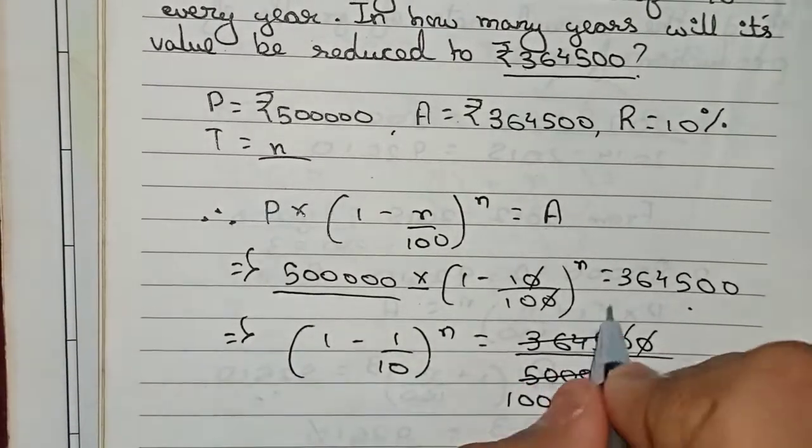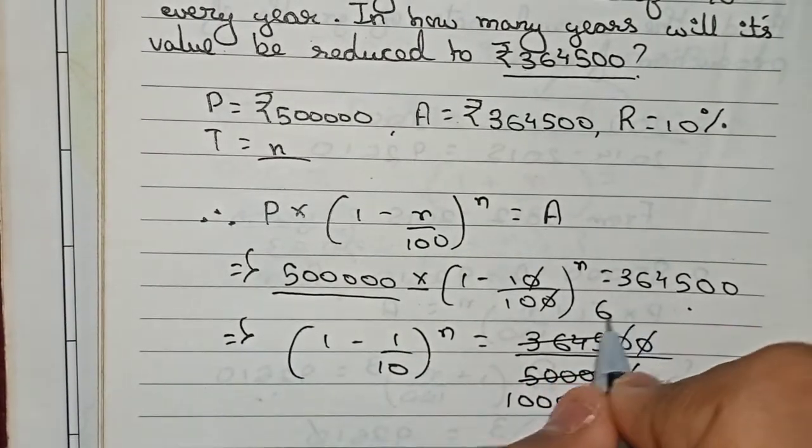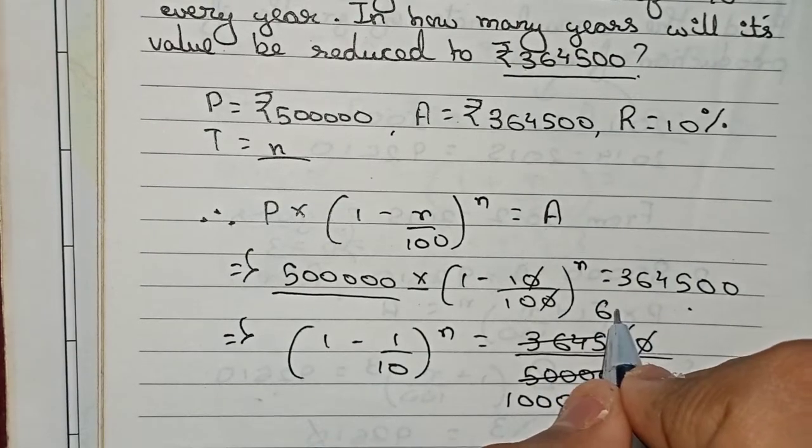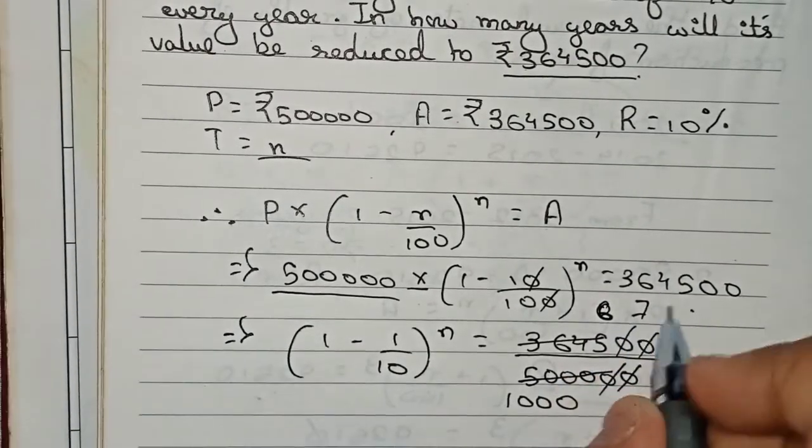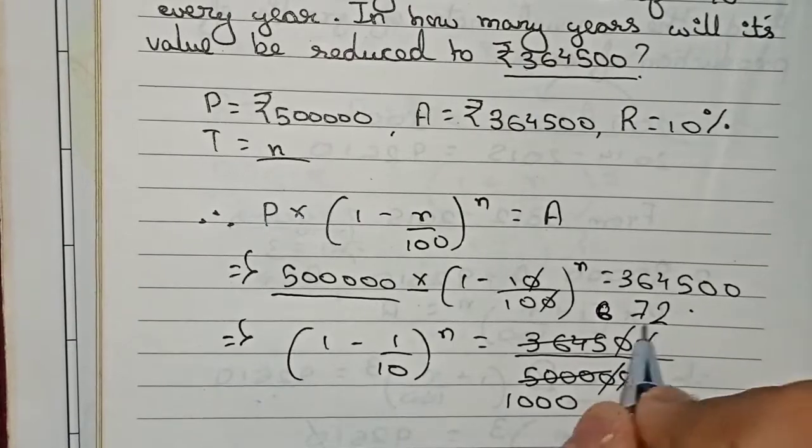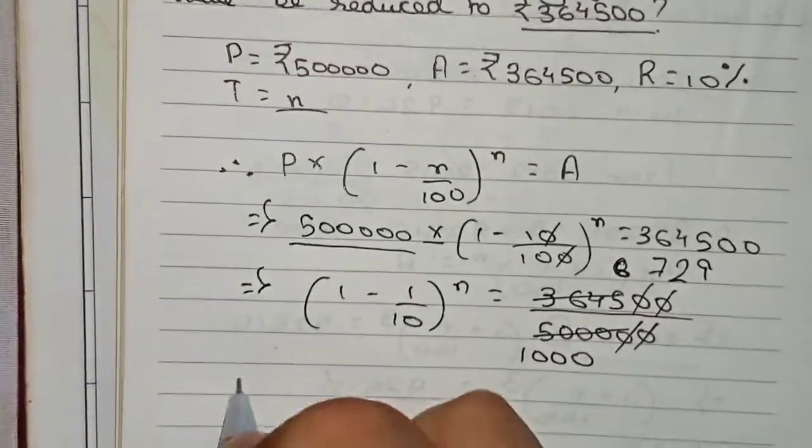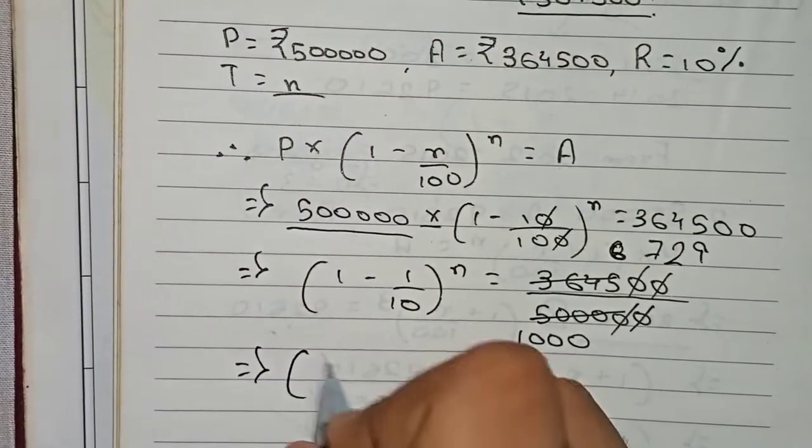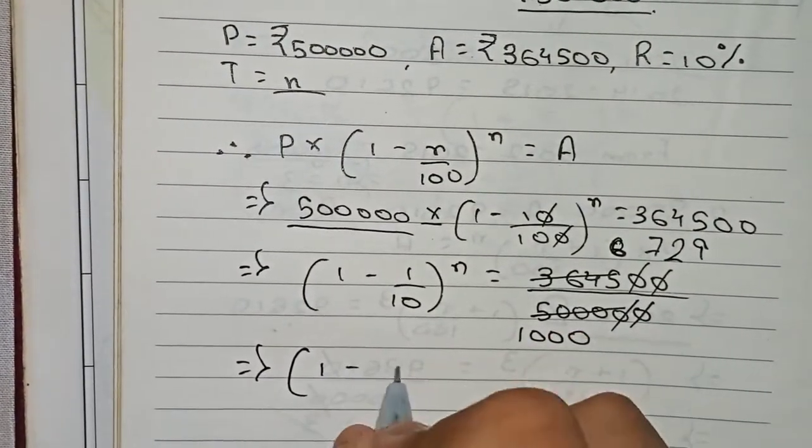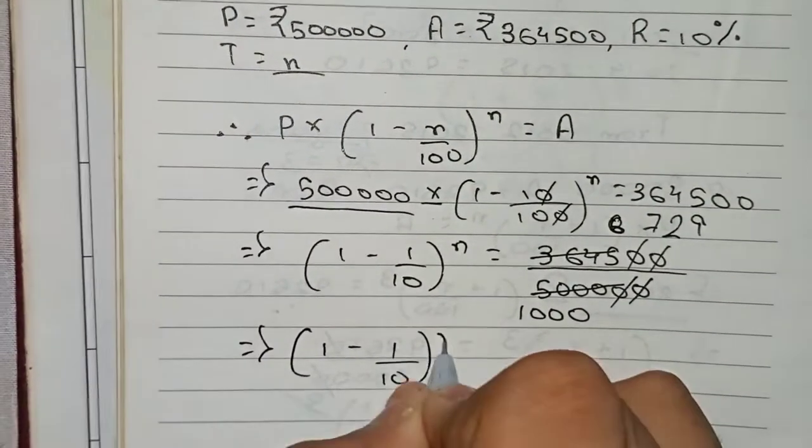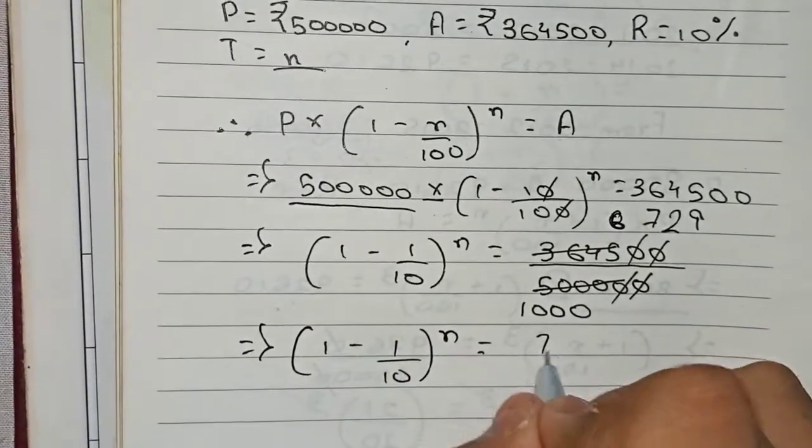After simplification, it becomes 729 by 1000. So now (1 - 1/10) to the power n equals 729 by 1000.